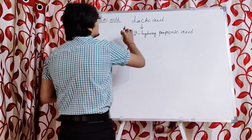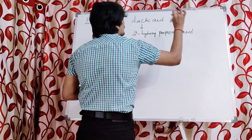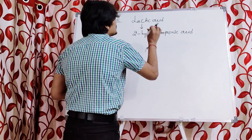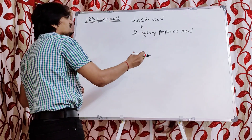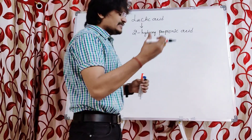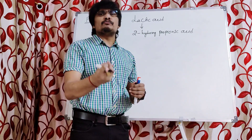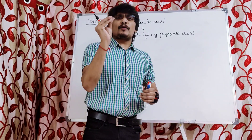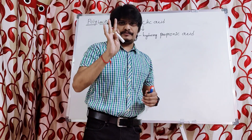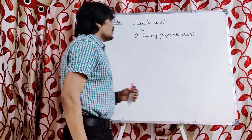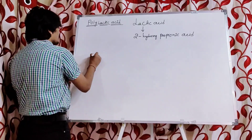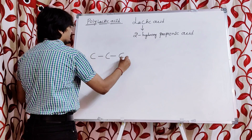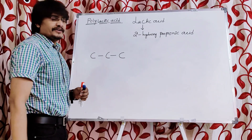Now how will we get the structure of 2-hydroxy propionic acid? It is very easy — no need to memorize by writing it 10 times. 'Prop' stands for three carbons, so accordingly we draw three carbons and label them one, two, three.